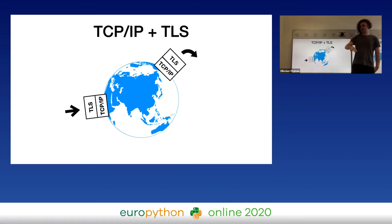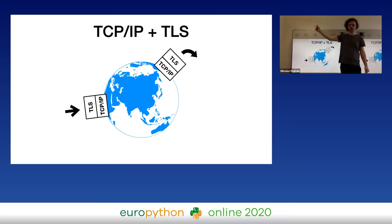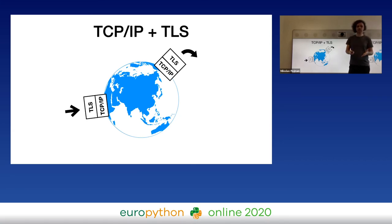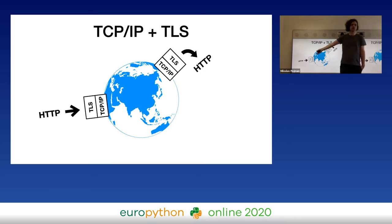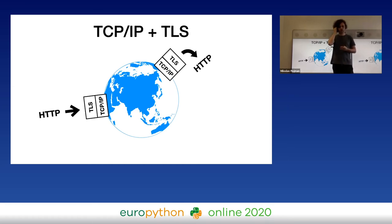HTTPS is HTTP over TLS, and TLS is just another box that sits on top of TCP. It encrypts everything that goes in and decrypts everything that comes out. TLS prevents eavesdropping or data tampering — nobody can read or change your payload. Similar to TCP, TLS is also protocol-independent, so we can write HTTP to it and get HTTPS. For example, FTPS is FTP over TLS over TCP.